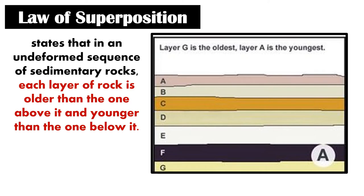In this picture, if we arrange the layers from oldest to youngest, the oldest is letter G because it is at the very bottom. G is older than letter F, but F is older than letter E. To reiterate superposition: a rock layer is older when it is below another rock layer, and younger when it is at the very top, like rock layer A compared to all the other rock layers.